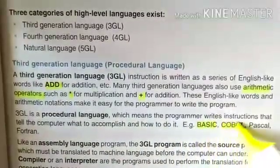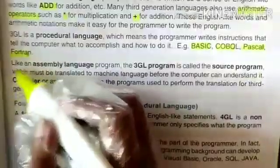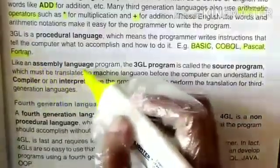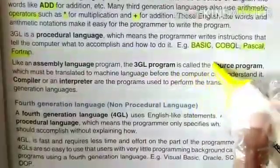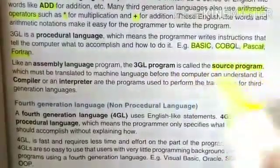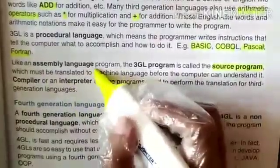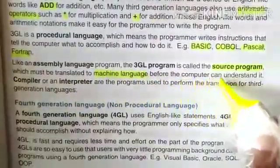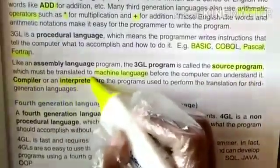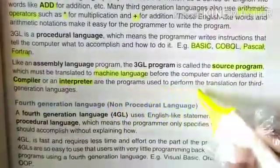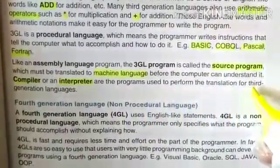Examples of 3GL include BASIC, COBOL, PASCAL, and FORTRAN. Like an assembly language program, the 3GL program is called the source program, which must be translated to machine language before the computer can understand it. Compiler or interpreter are the programs used to perform the translation for third generation languages.